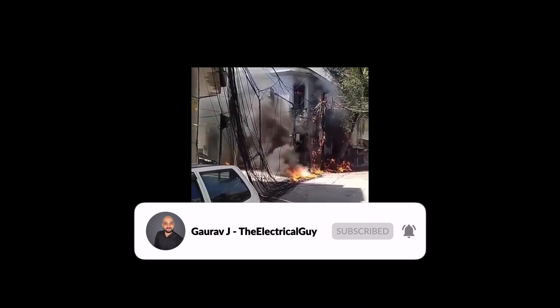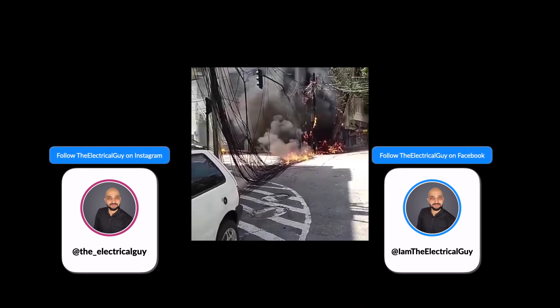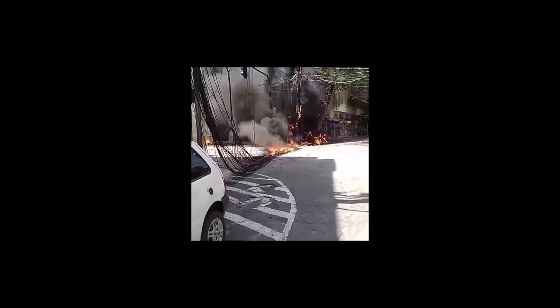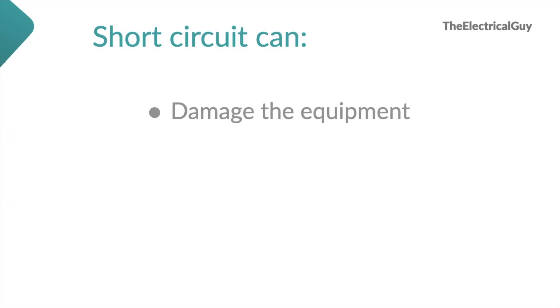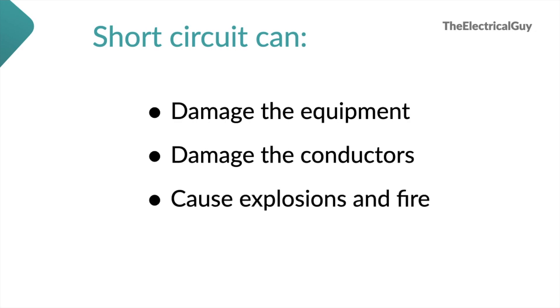In a power system, this short circuit current can go up to thousands of kilo-amperes — like 25 kilo-amperes, 31.5, 40, 50, 63 or even more. This huge current will not only damage the equipment installed but also the conductors carrying that current. It can cause explosions and fire. We have heard many news stories about how buildings and shops have caught fire because of short circuits and people have also lost their lives. So definitely it is dangerous.